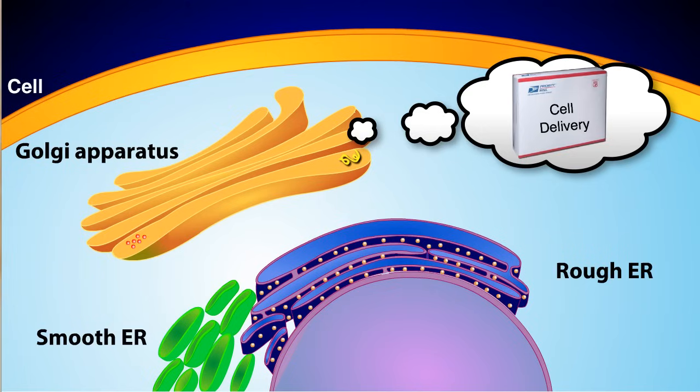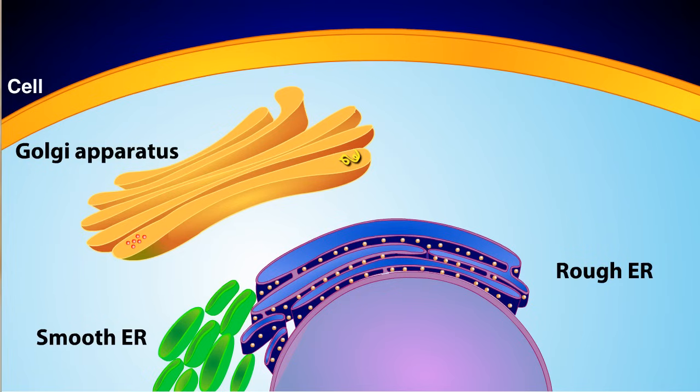For example, some of the proteins from the rough ER are modified by the Golgi apparatus to become digestive enzymes, which are packaged into a special type of vesicle called the lysosome. The job of this particular lysosome is to fuse with another vesicle coming in from the plasma membrane.